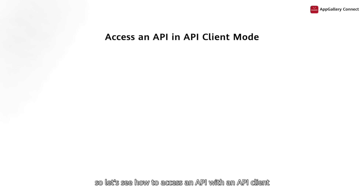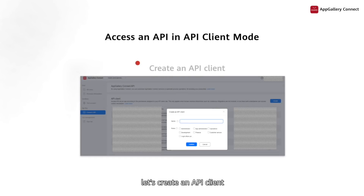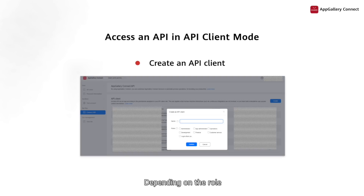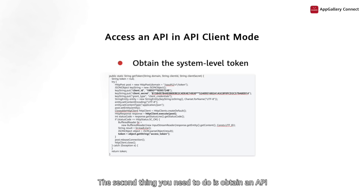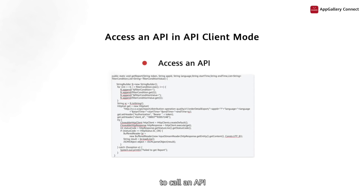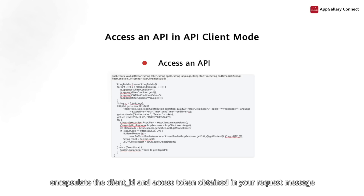Let's see how to access an API with an API client. First, let's create an API client. The client will access APIs based on its role's permissions, so make sure to specify its role when you're creating it. Depending on the role, the client can access different APIs. Second, obtain an API access token based on the client ID and client secret of your API client. Lastly, to call an API, encapsulate the client ID and access token obtained in your request message.